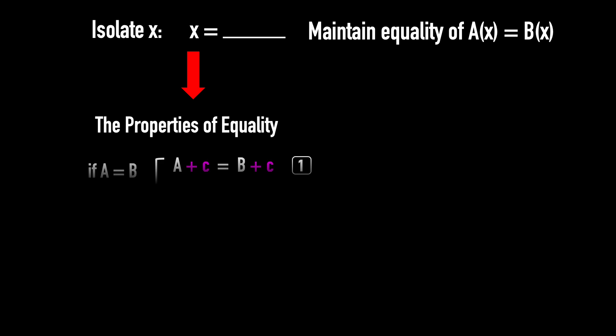Isolate X. Our goal is to keep X alone on one side and move everything else to the other side. The key is to maintain equality between the two sides. To do this, we often use the properties of equality.